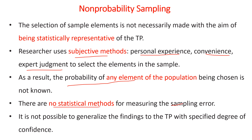We cannot measure the sampling error in non-probability sampling, unlike in probability sampling. It is also not possible to generalize the findings to the target population with a specified degree of confidence, because the sample taken is based on subjective judgment rather than the randomization principle. That is why we cannot generalize to the target population based on the findings of the samples.